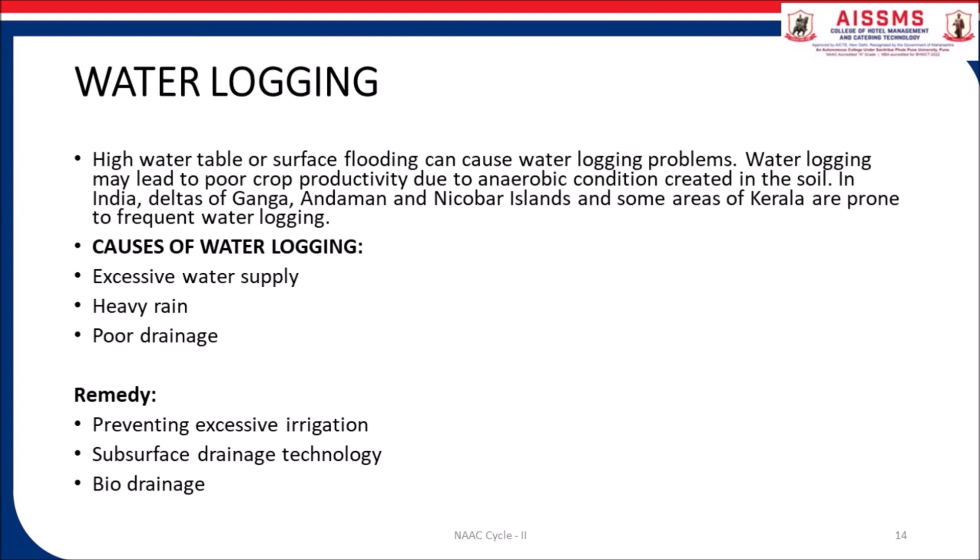Let's understand water lodging in detail. High water table or surface flow flooding can cause water lodging problems. Water lodging may lead to poor crop productivity due to anaerobic conditions created in the soil. In India, deltas of Ganga, Andaman and Nicobar Islands and some areas of Kerala are prone to frequent water lodging. Causes of water lodging: excessive water supply, heavy rain, and poor drainage. Remedies: preventing excessive irrigation, surface drainage technology, and biodrainage.